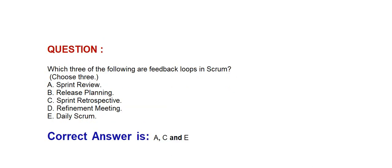Next question: Which three of the following are feedback loops in Scrum? Choose three options. Option A: Sprint Review. Option B: Release planning. Option C: Sprint Retrospective. Option D: Refinement meeting. Option E: Daily Scrum. Correct answer is Option A, C, and E.